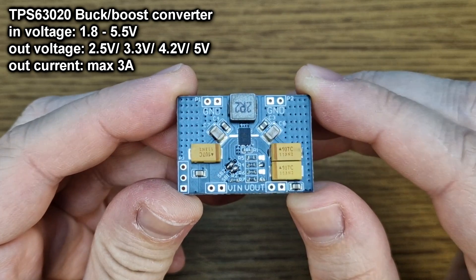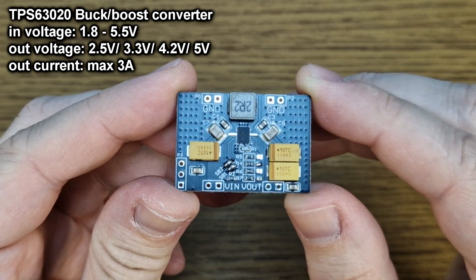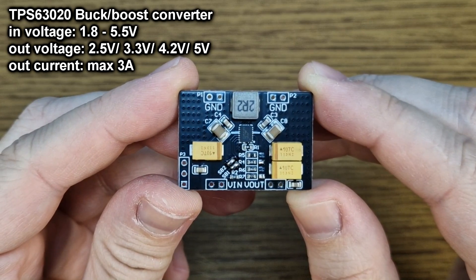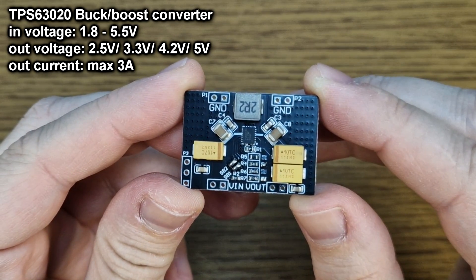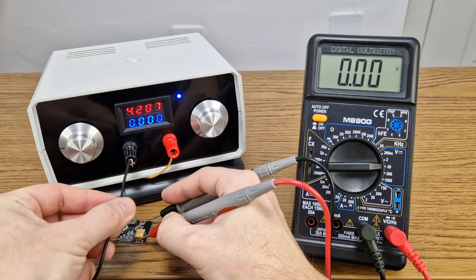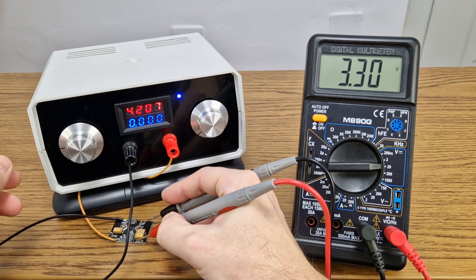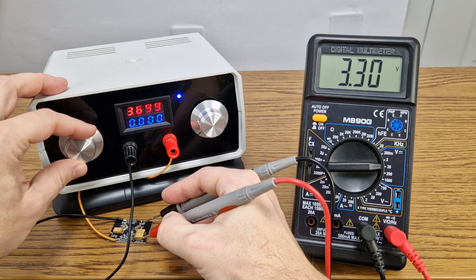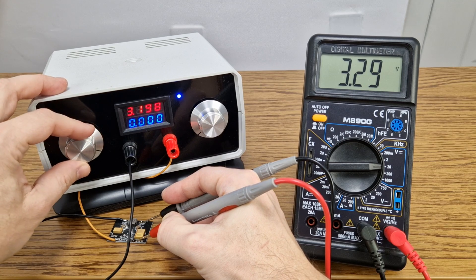I got a new buck boost converter for this project. It has some great features. The most important one is the input voltage between 1.8 and 5.5 volts, so it can be easily powered with a lithium ion cell for projects that need a stable 3.3 or 5 volts output. I got a 3.3 volts version for my project.